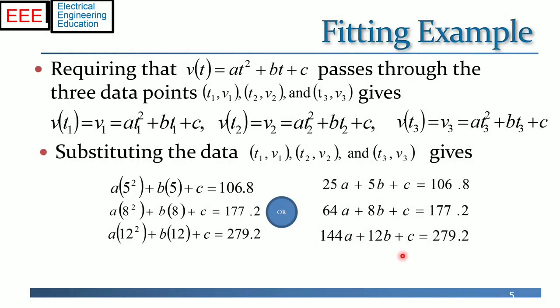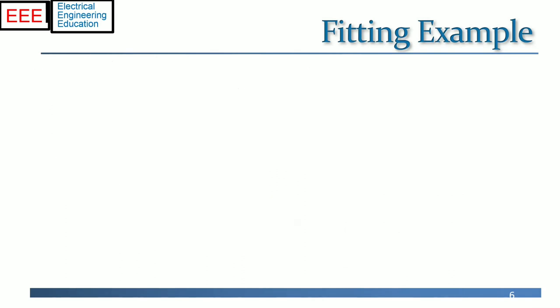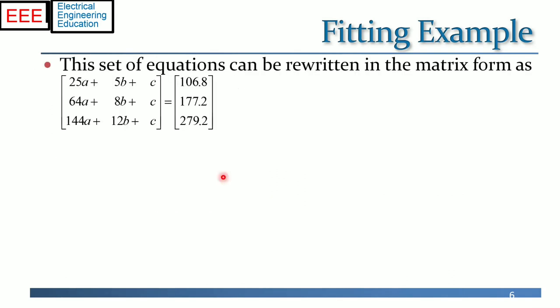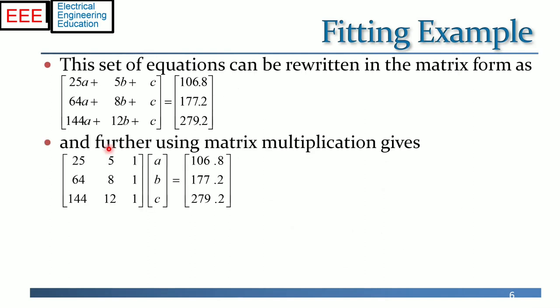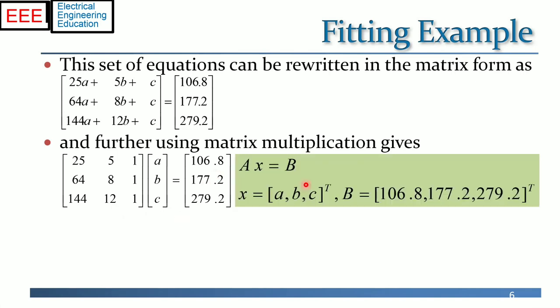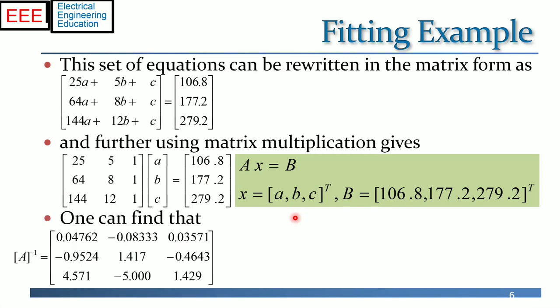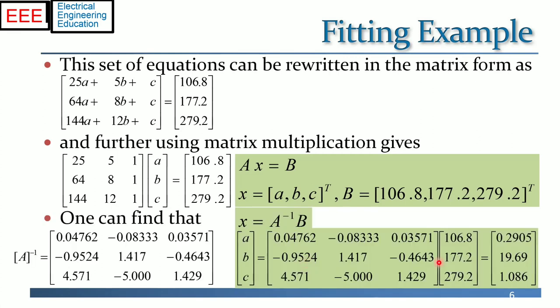Note that the three equations can also be written as the sum of vector products. In the matrix form, this set of equations can be rewritten and further using matrix multiplication gives, where the three by three matrix A is multiplied with the three variables constituting the column matrix X with the unknown entries A, B, and C. The result is the velocities vector B with entries 106.8, 177.2, and 279.2. By finding the inverse of matrix A and then multiplying with the column vector B to find the column vector of unknowns, we have A equals 0.2905, B equals 19.69, and C equals 1.086.